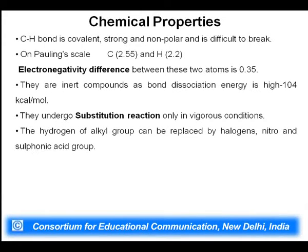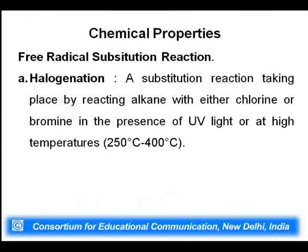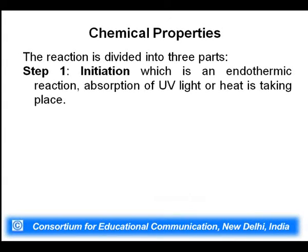These compounds are inert and also known as paraffins, meaning feebly reactive. Although difficult to react, alkanes can undergo certain substitution reactions where hydrogen is replaced by groups like halogens, nitro group, or sulfonic acid group under vigorous conditions. The first important reaction is halogenation, carried out under UV light or at very high temperatures. This is a free radical reaction involving generation of free radicals, divided into three steps.